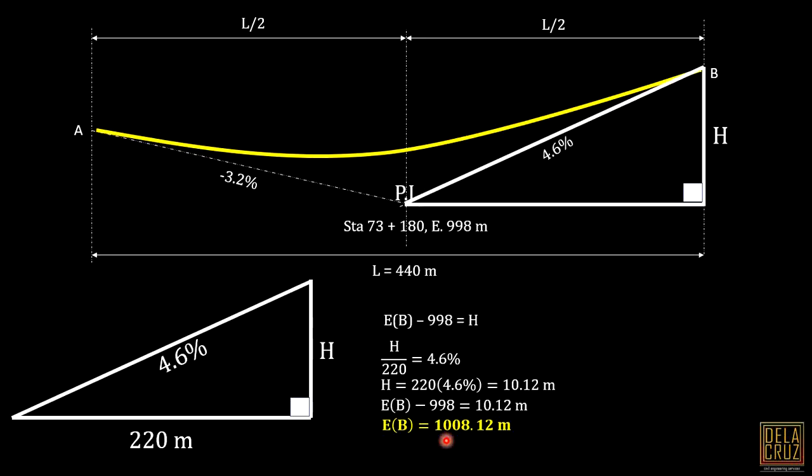We observed that we cannot always use the grade diagram. The key technique here is to always find a right triangle in your drawing — this applies to geometry and triangle problems in general. That's it for these two problems. If you want me to solve more problems related to the CE board exams, just comment down below. Thank you and God bless — don't forget to like and subscribe for more videos.